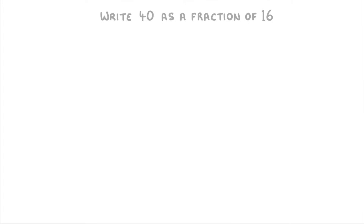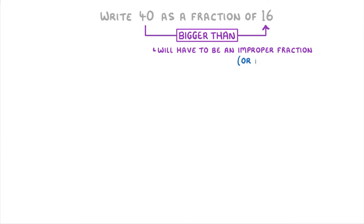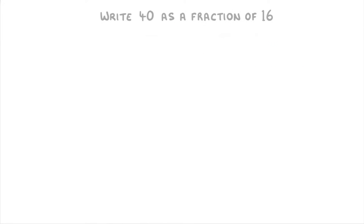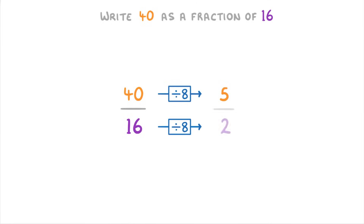In this next question, we're asked to express 40 as a fraction of 16. The first thing to notice here is that 40 is bigger than 16, which means that our fraction will be bigger than 1. So it will have to be an improper fraction or a mixed number. But this doesn't make any difference to our workings. So the first step is to put 40 over 16 to make a fraction, and then we have to simplify it. We could divide top and bottom by 8 to get 5 over 2, and that would be our final answer.